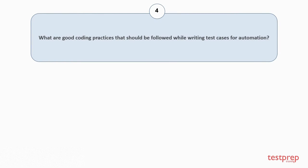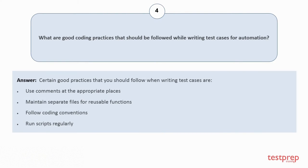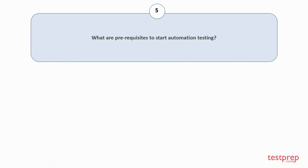Question number four: What are good coding practices that should be followed while writing test cases for automation? Certain good practices include: one, use comments at the appropriate places; two, maintain separate files for reusable functions; three, follow coding conventions; four, run scripts regularly.